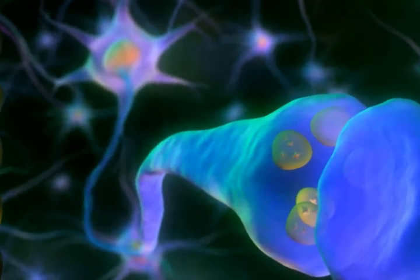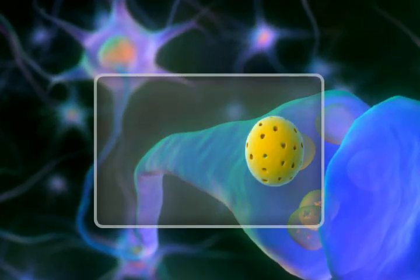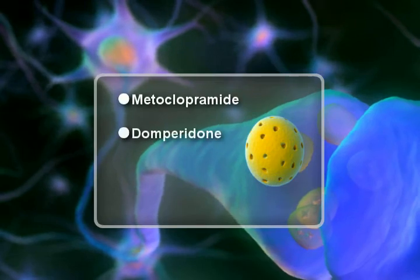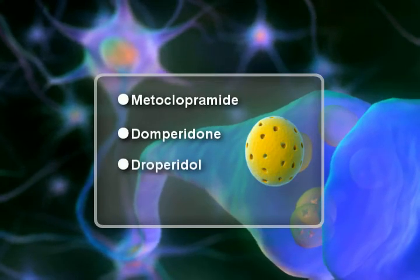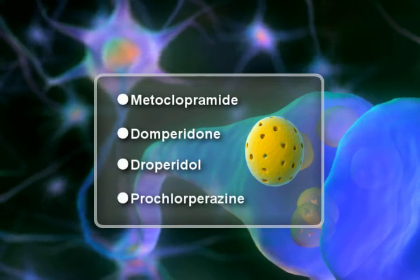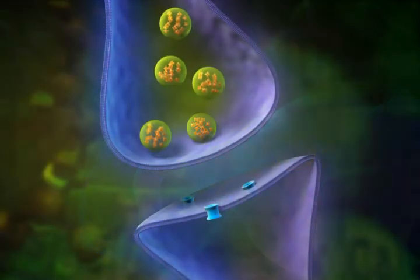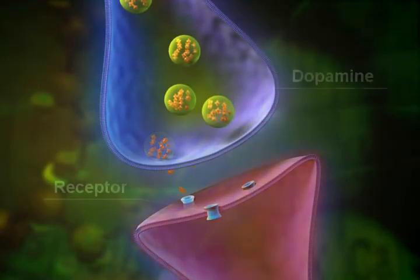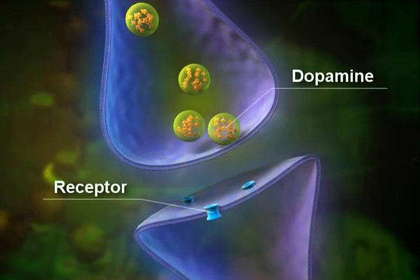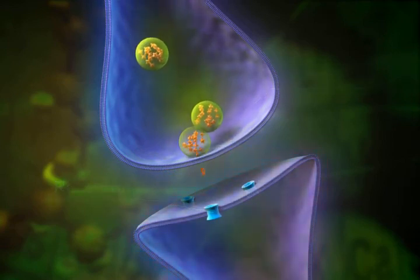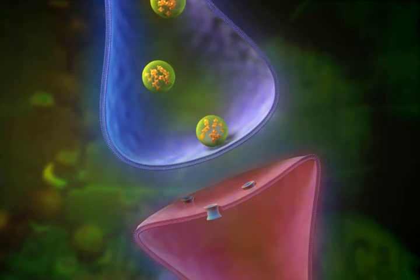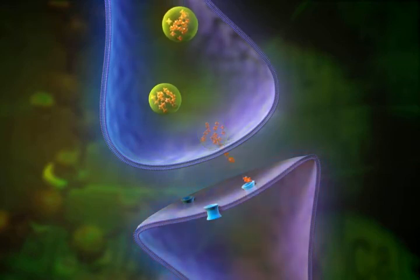Common D2 receptor antagonists are metoclopramide, domperidone, droperidol, and prochlorperazine. They work by inhibiting the activity of dopamine at the D2 receptor in the chemoreceptor trigger zone, thereby limiting the emetic input to the medullary vomiting center.